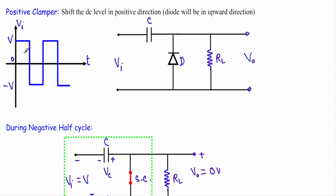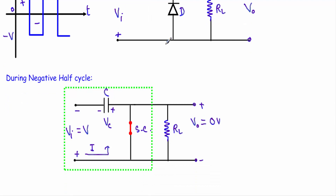In our first step of analyzing this clamper circuit, we identify which half cycle drives the diode into forward bias. During the negative half cycle of the square wave voltage, the diode will be in forward bias — this terminal becomes positive and this terminal becomes negative. Since this is an ideal diode, I replace it with a short circuit. When the diode is replaced by a short circuit, the output voltage equals zero, because we take the output across the load resistor which is in parallel with the short circuit.